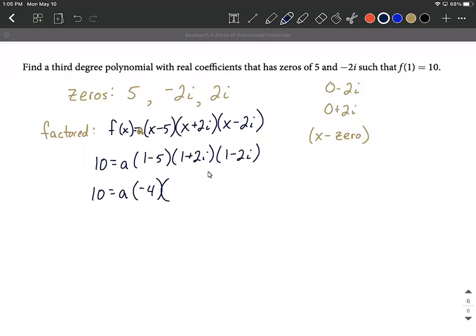So 1 times 1 is going to be 1. My outer 1 times negative 2i is minus 2i. The inner 2i times 1 is plus 2i. And finally, lastly, we have 2i times negative 2i is negative 4. And don't forget the i squared.